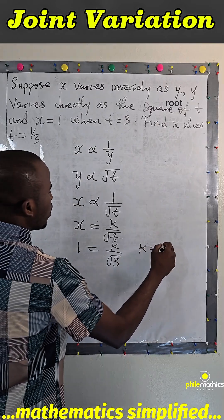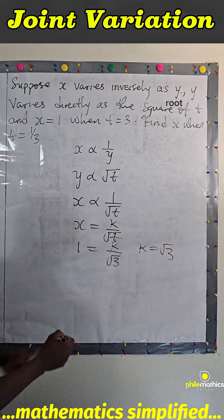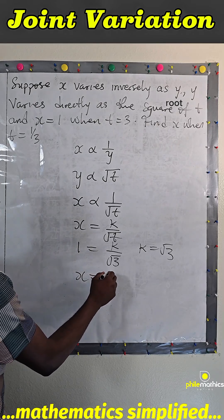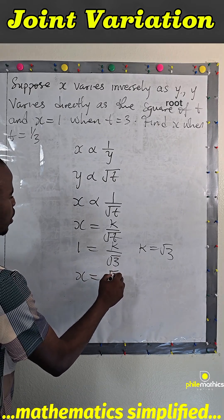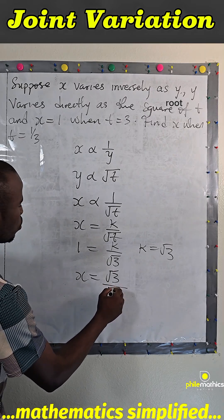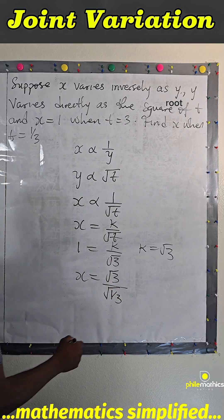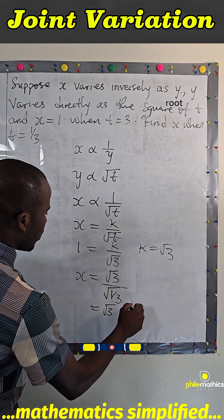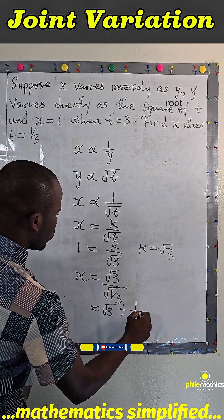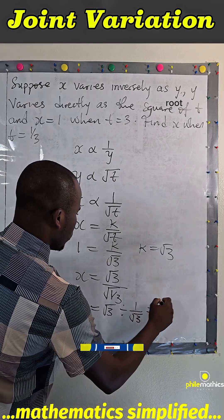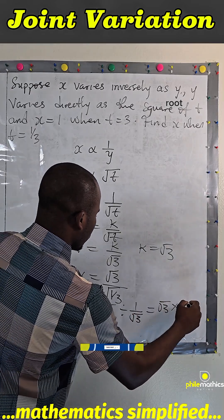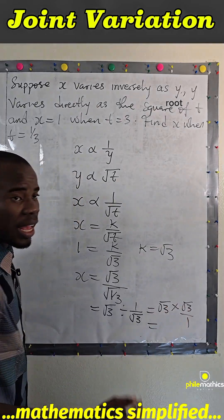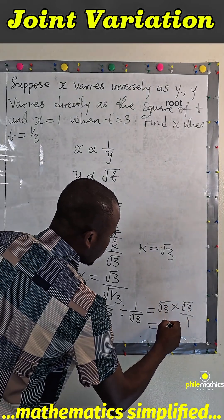If x is 1 when t is 3, then 1 equals k over root 3, so k equals root 3. We are asked to find x when t is 1/3. So x equals root 3 divided by root(1/3), which is root 3 times root 3, which equals root 9, and root 9 is 3. So x equals 3.